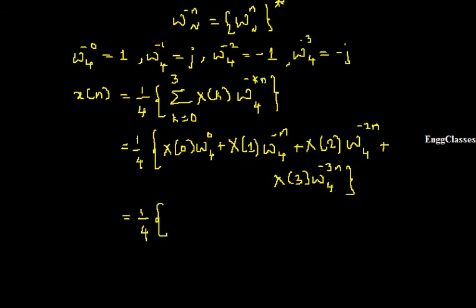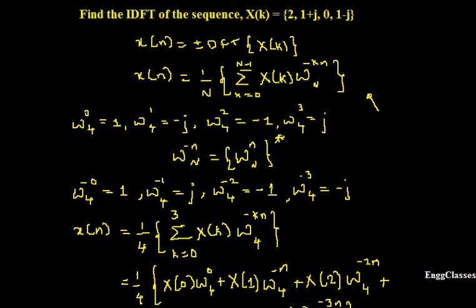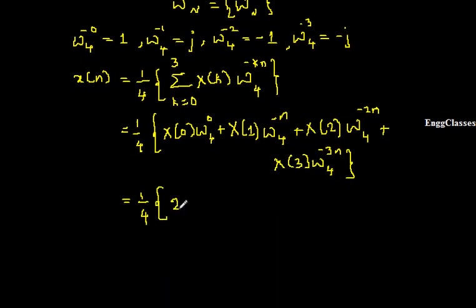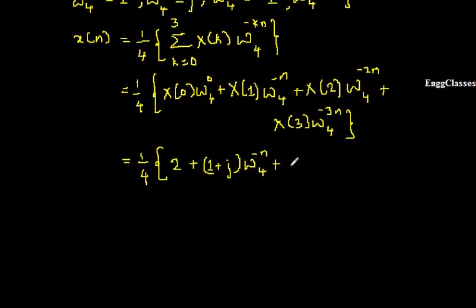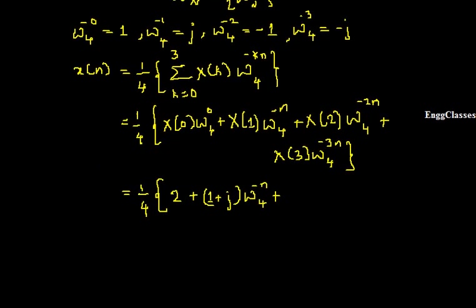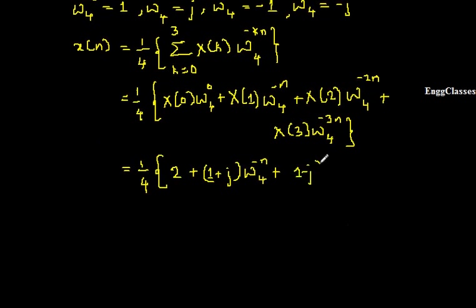Now substituting the given X of K values: X(0) is 2, so 2 times W4^0 which is 1, giving just 2. X(1) is 1+j, multiplied by W4^(-n). X(2) is 0, so that term vanishes. X(3) is 1-j, multiplied by W4^(-3n). So the expression for X of N is: 1/4 · [2 + (1+j)·W4^(-n) + (1-j)·W4^(-3n)].